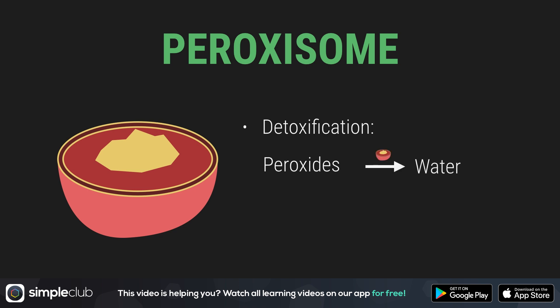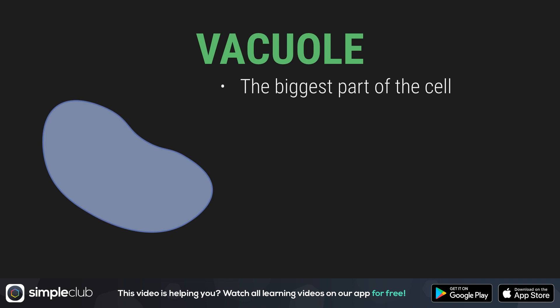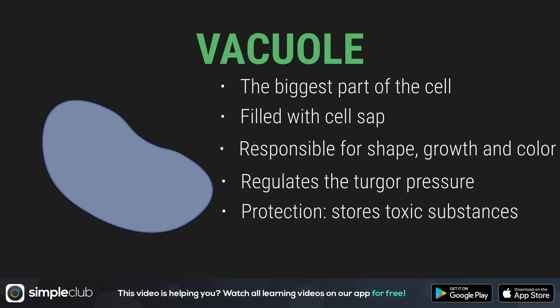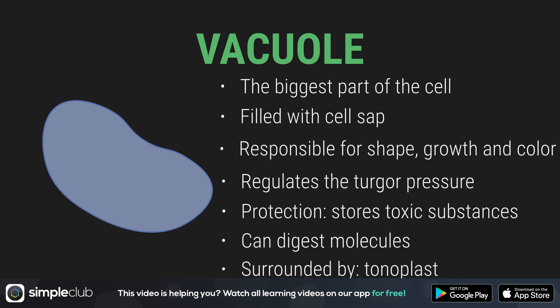The peroxisomes take care of detoxification by converting peroxides into water in order to protect the cell. Whoever thinks the vacuole is rather unimportant is miscalculating. It usually occupies the biggest part of the plant cell. The vacuole is filled with cell sap. The central vacuole is responsible for the cell's circular shape, growth, and color. Moreover, it is responsible for turgor pressure — used by impatiens when they throw their seeds everywhere, for example. Here, dissolved substances are stored and toxic substances kept under control. The cell sap helps the vacuole to digest small molecules. It is surrounded by a membrane called the tonoplast that separates the vacuole from the rest of the cell.